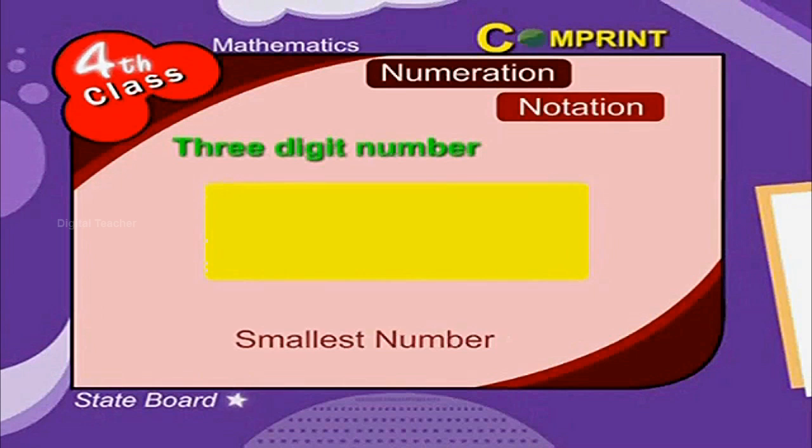At the same time, the smallest 3 digit number is 100, and the smallest 4 digit number is 1000.